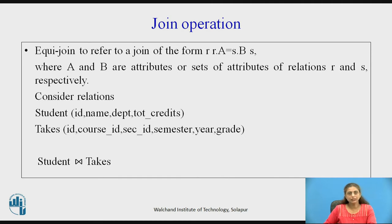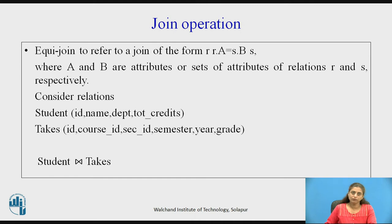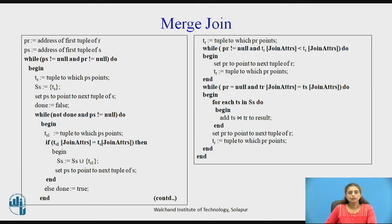Equi join is of the form R.A = S.B, where A and B are sets of attributes from relations R and S. If we consider the two relations student and text, here id is going to be the common attribute on which we can perform the join operation.